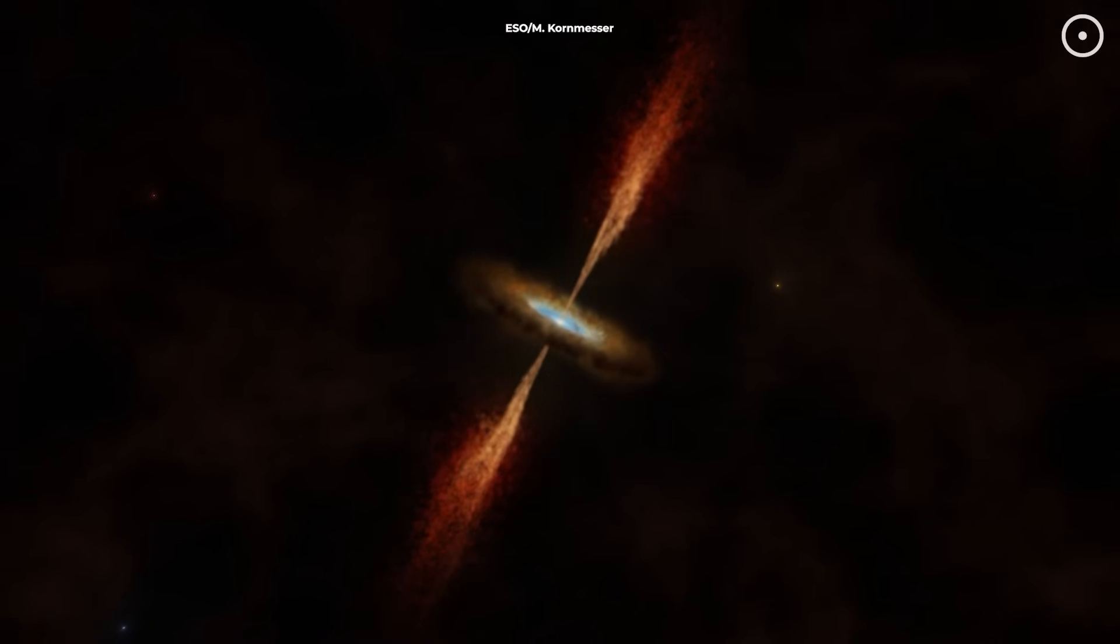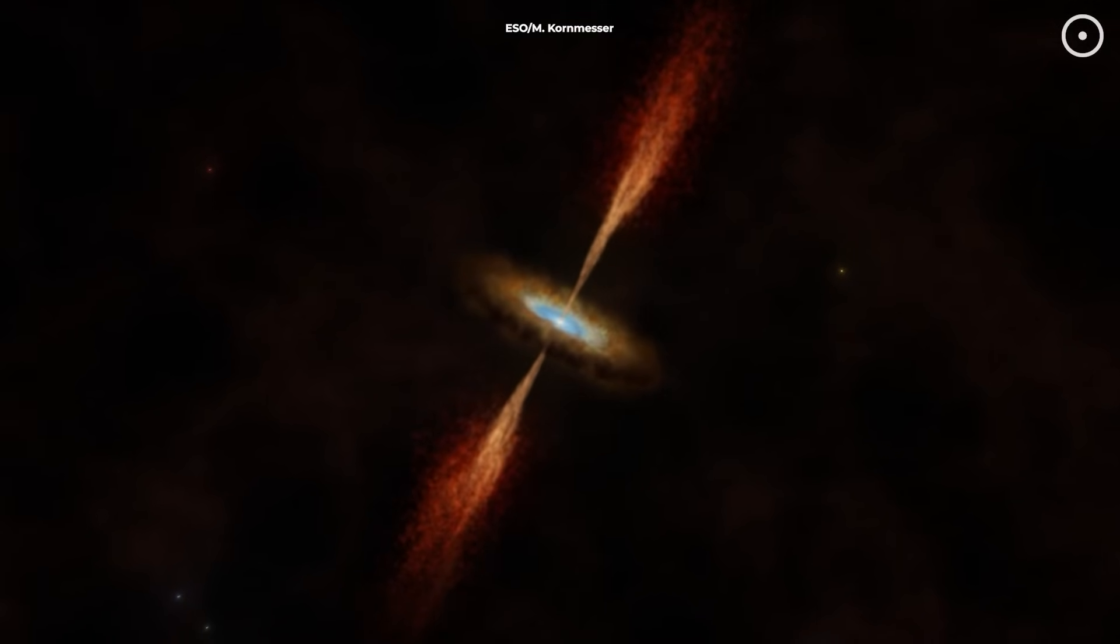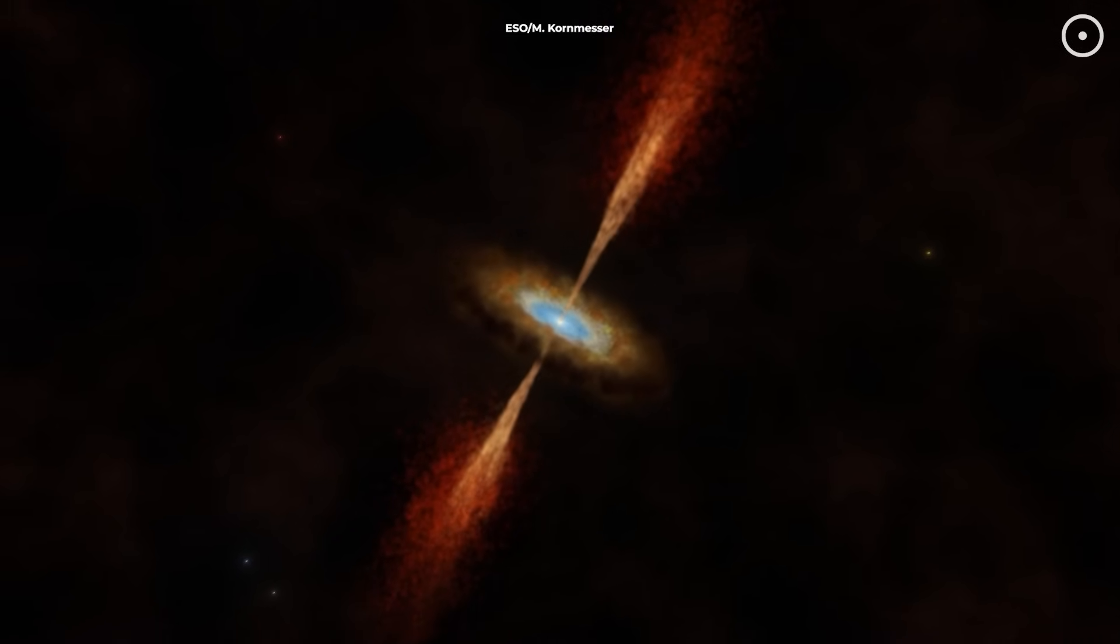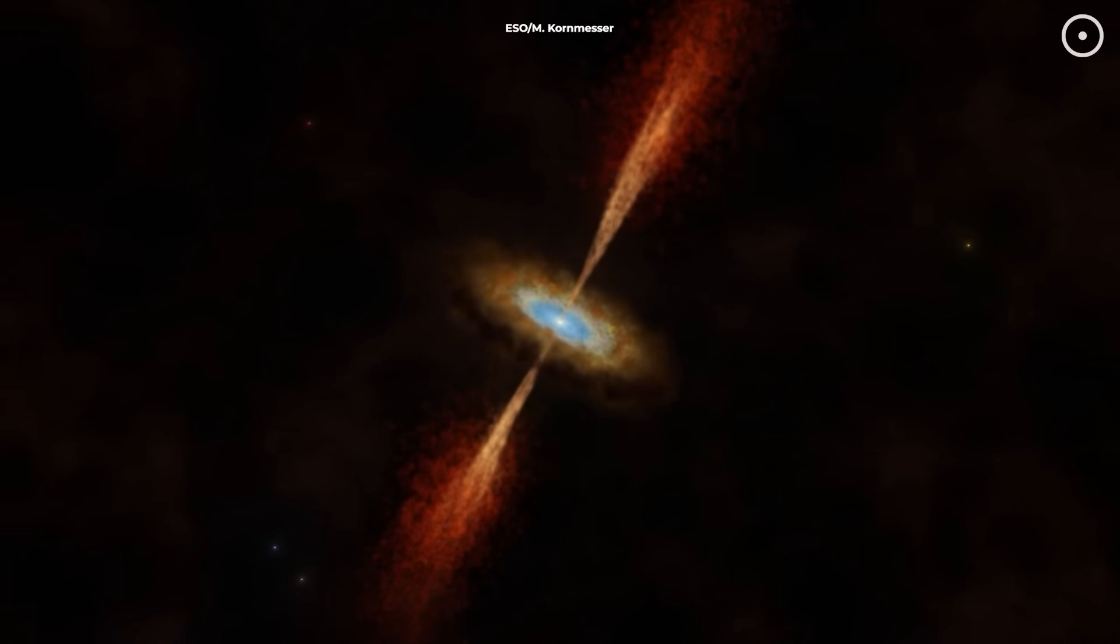As gravity pulls material toward the growing star, not all of it makes it to the surface. Instead, some of it gets shot out in those spectacular jets we can see.